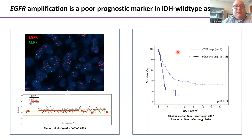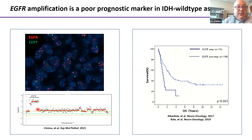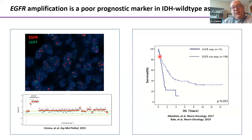Another alteration seen in glioblastomas is EGFR amplification, occurring in about 50% of IDH wild type glioblastomas. It's typically tested by fluorescence in situ hybridization, with the centromere in green and EGFR signal in red. EGFR is usually found in extra-chromosomal double minutes, allowing high-level amplification visible on copy number coverage plots from targeted cancer assays. Similarly to chromosome 7 gain and 10 loss, lower-grade gliomas with EGFR amplification have a much shorter survival than those without.